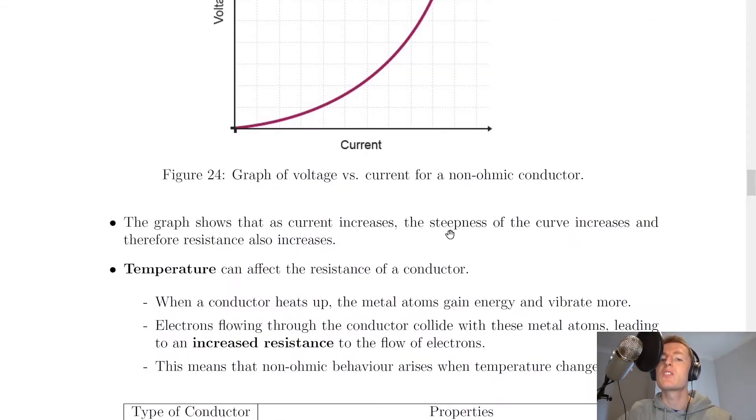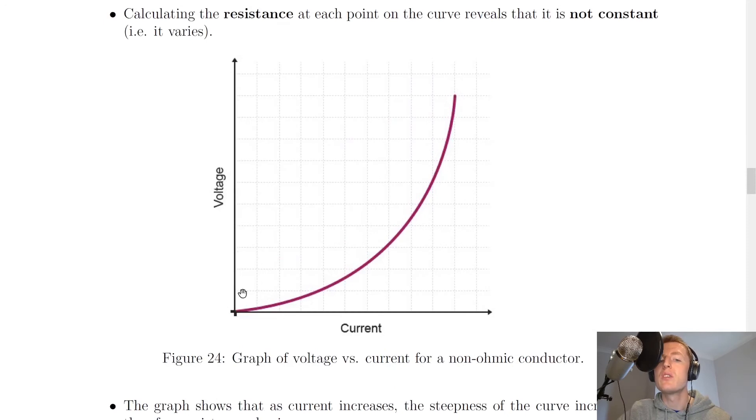So it says here, the graph shows that as current increases, the steepness of the curve increases and therefore resistance also increases. So notice how the steepness increases, so resistance increases.